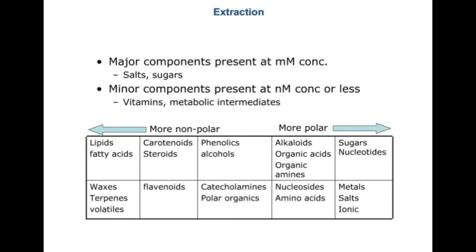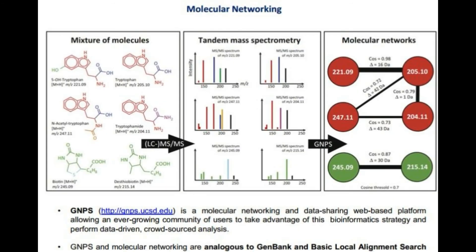In the field of global metabolomics, we try to visualize our entire metabolic network in terms of a molecular map of relationships between the ions of the molecules of interest. Molecular networking is a computational strategy that aids visualization and interpretation of the chemical repertoire that can be detected using mass spectrometry.